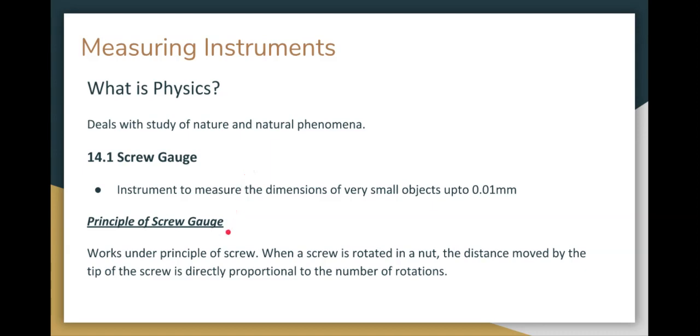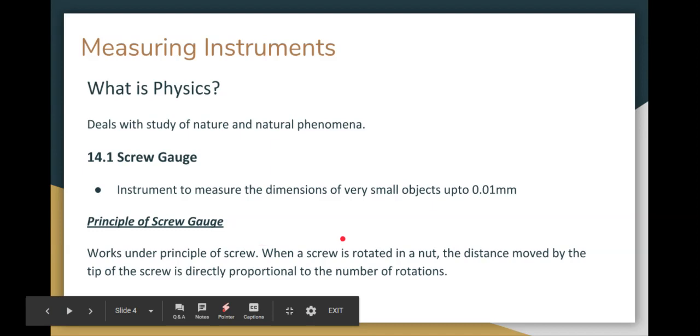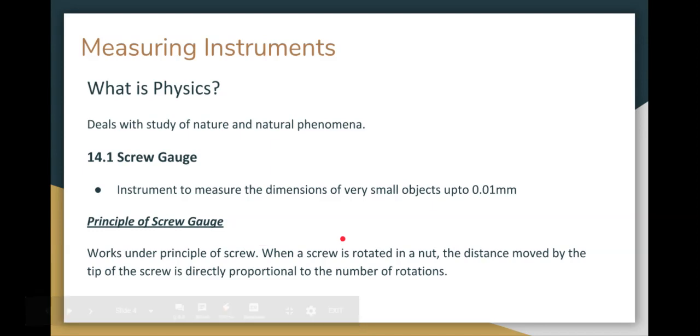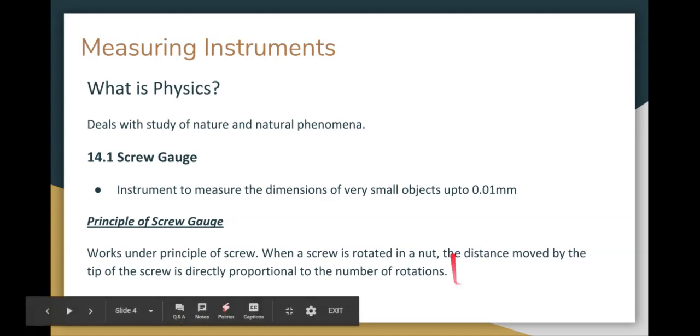So this is the principle of the screw gauge. If you use a screw on a nut, the screw needs to travel. So when a screw is rotated and connected, the distance moved by the tip of the screw is directly proportional to the number of rotations.